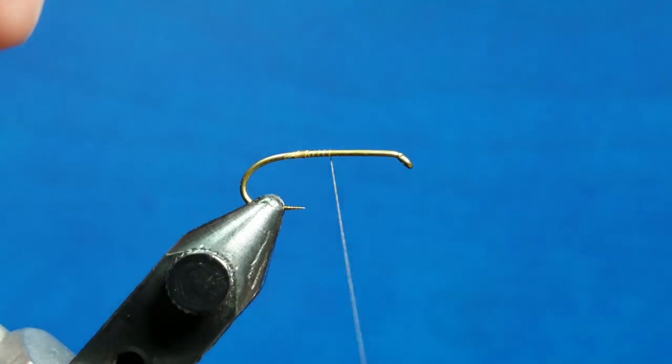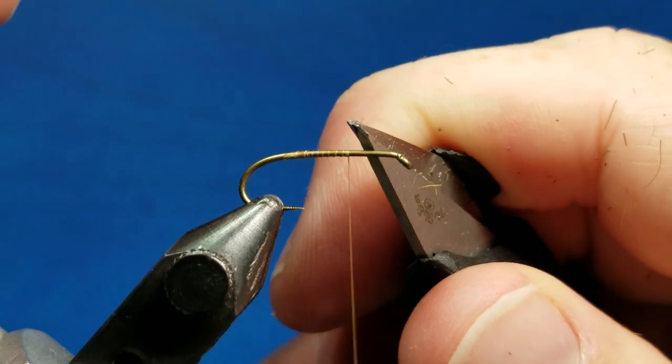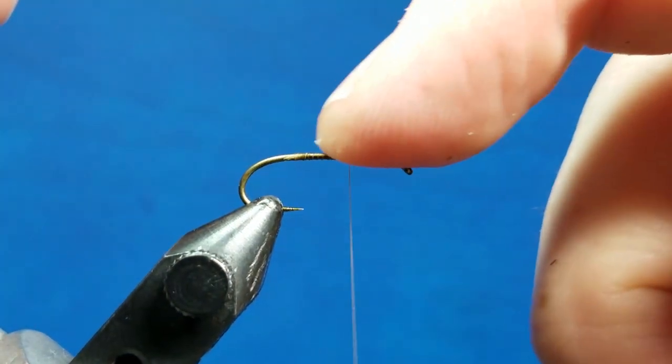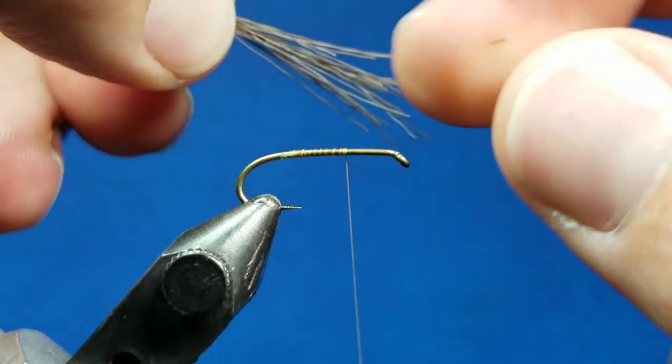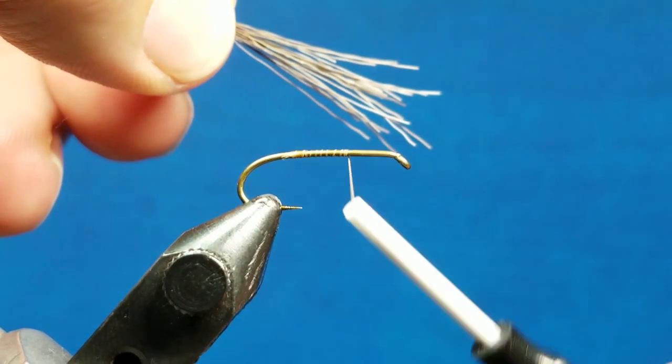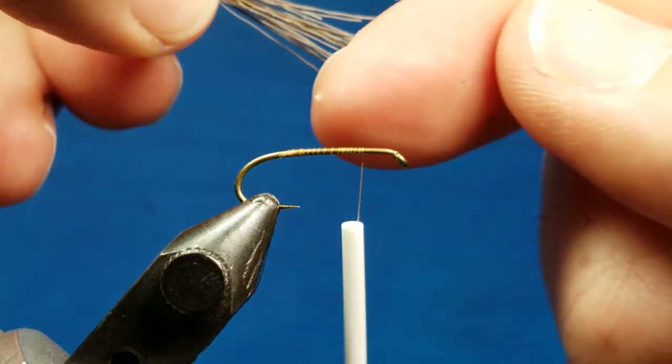A lot of times like at the front of an elk hair caddis we tie in our stuff, we tie off the hackle, and there's always a little bit of open bare hook shank. We talked about the fact that this hook shank is so smooth that if you don't lay down a few nice thread wraps, it doesn't have to be huge build up of thread but just at least a few nice side-by-side wraps...